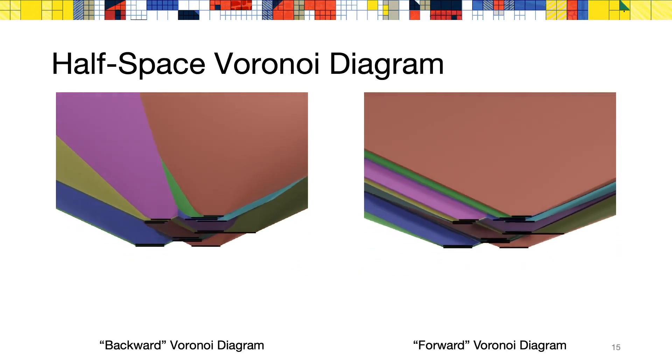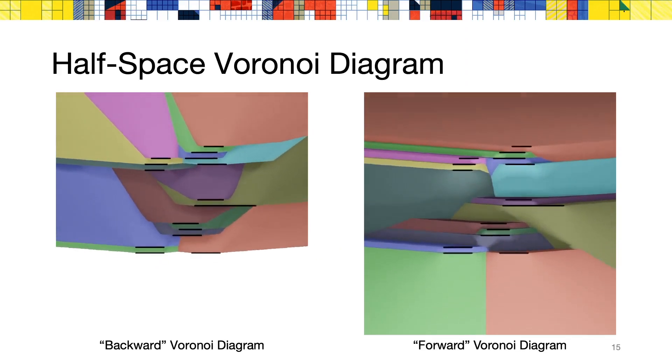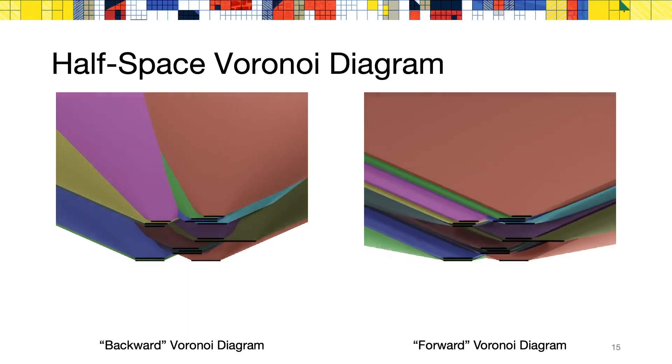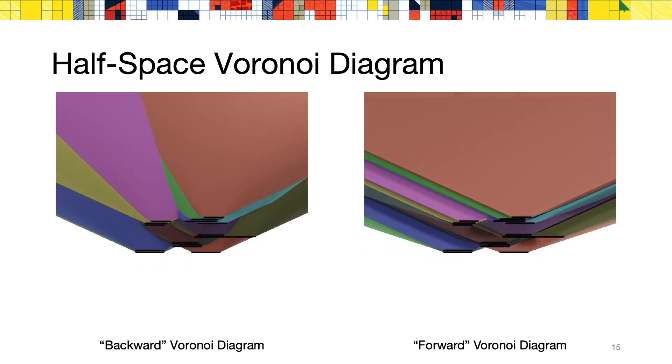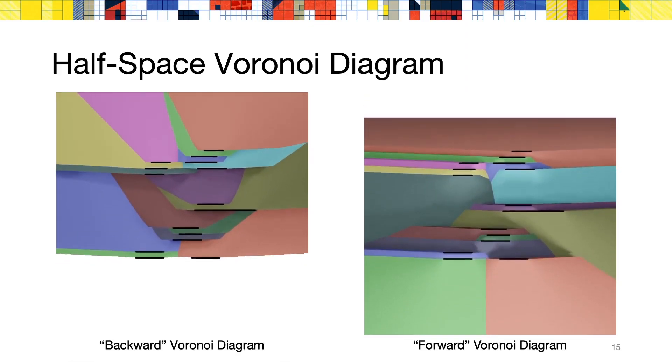Finally, note that this concept applies to any shape, not just point seeds. In this example, we show the half-space Voronoi diagram formed by a set of segments, which in this case are the parallel arrays obtained by discretizing the input shape into dexels.